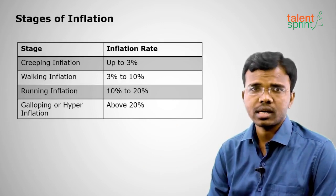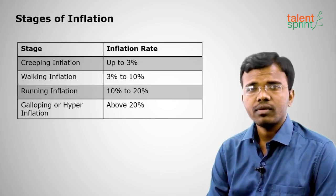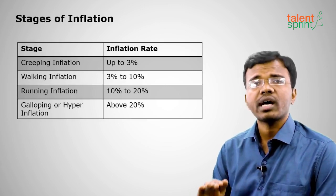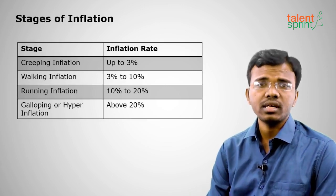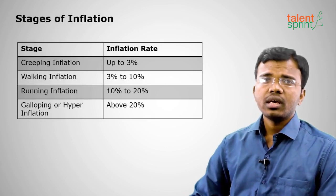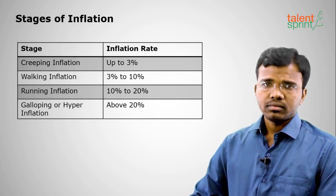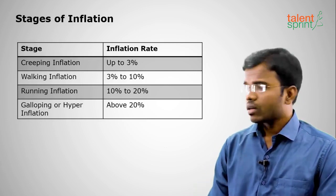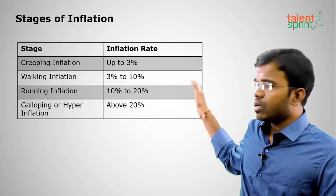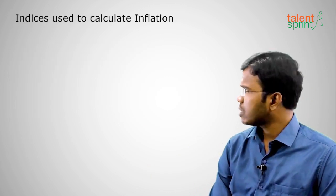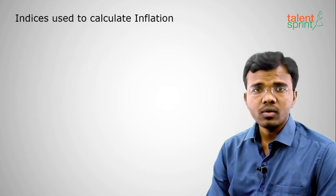In India, RBI has a target for inflation of 5%, meaning only a 5% increase is allowed in a year. Moving on to the next topic — what are the indices used to calculate inflation?